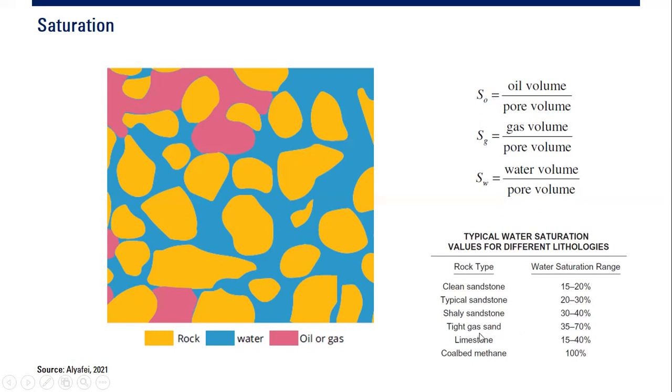Very high water saturation, but because this is gas, gas can still flow in this high saturation environment. Coal bed methane is almost 100 percent.